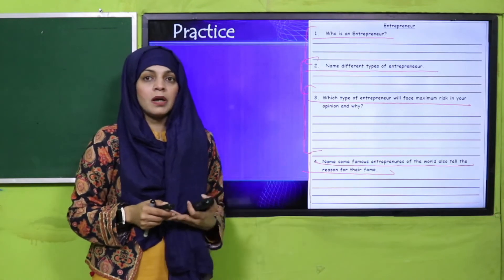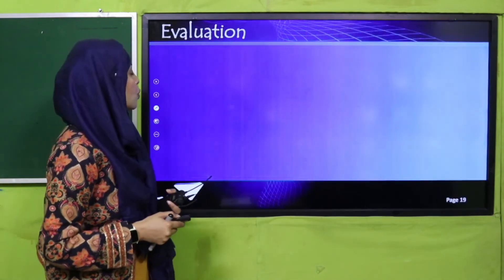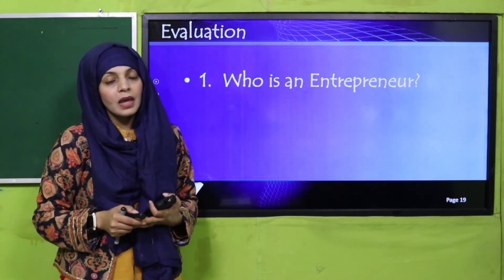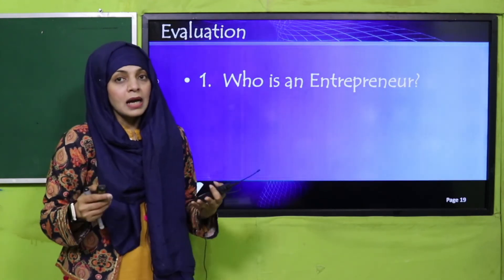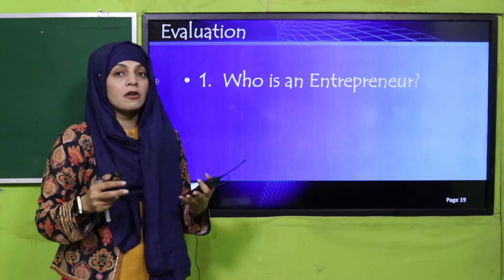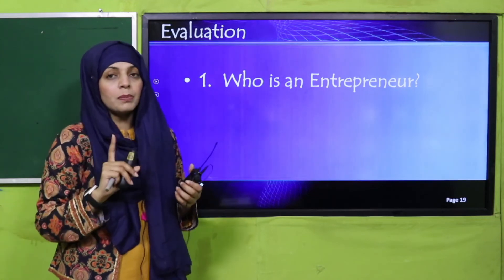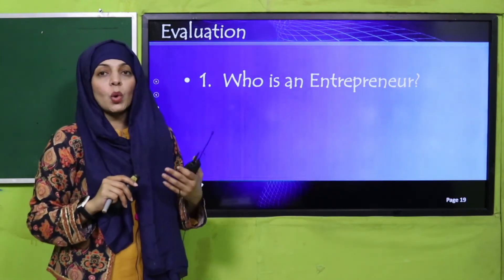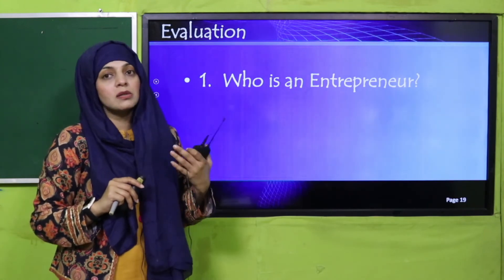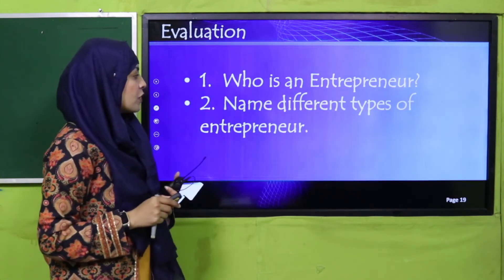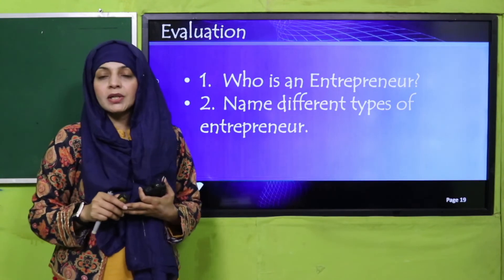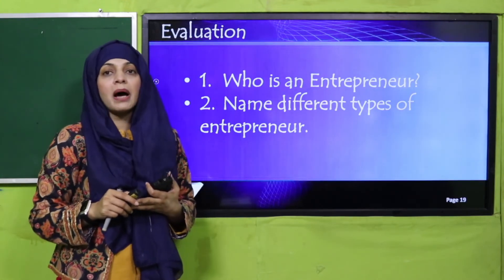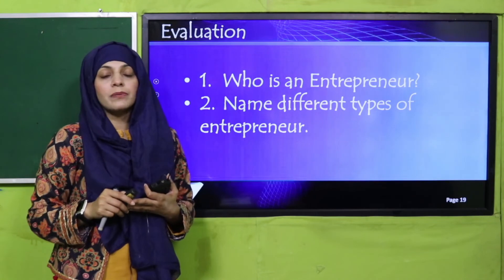My dear students, for evaluation: quickly tell me who is an entrepreneur. They start their own business from scratch — it is a single person without any company, and they enjoy the risks and the rewards all by themselves. Now name the different types of entrepreneurs: innovators, imitators, hustlers, researchers, buyers — these are all different types of entrepreneurs.